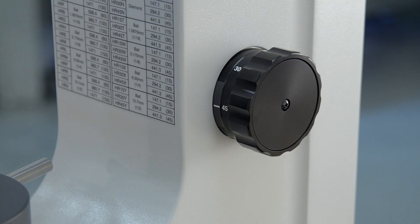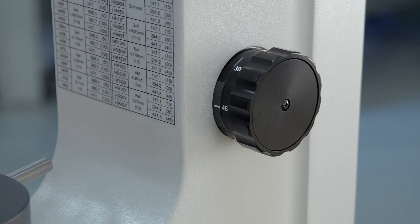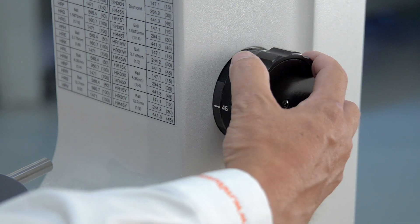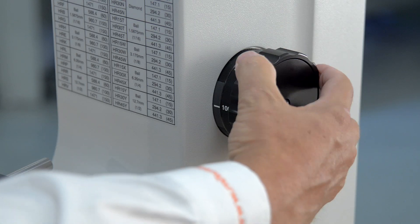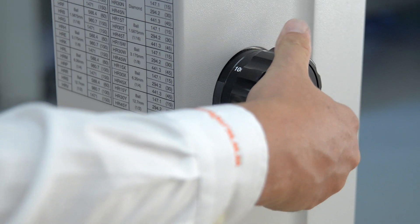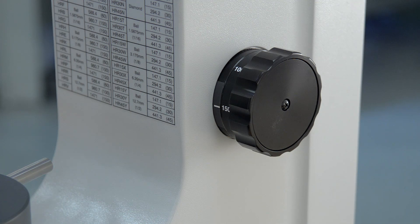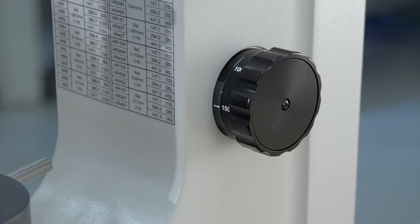The two HR-430 testers are similar to the digital HR-320 model, but the dial-a-weight system allows testing scales to be changed with much less operator input. Just turn the knob and the test force is set. The automatic brake and test initiation further simplifies the test method.